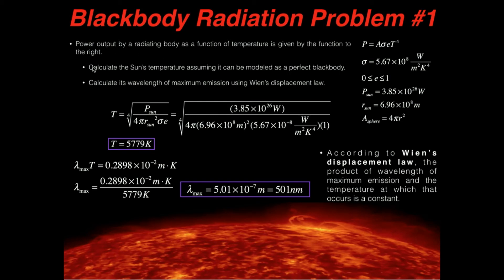That accomplishes our first point here. Then the next thing we're going to do is we're going to calculate the wavelength of maximum emission using Wien's displacement law. And this law basically says that if you take the emission maximum of the black body times its temperature, it has to equal a constant, which is 0.2898 times 10 to the negative second meter Kelvin.